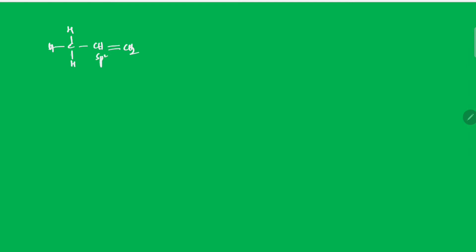SP2 carbon and SP3 carbon. In this CH sigma bond, this pi bond shifted to this carbon and this sigma bond shifted to this carbon. What happened? Here carbon is having a double bond and this carbon is having the negative charge.